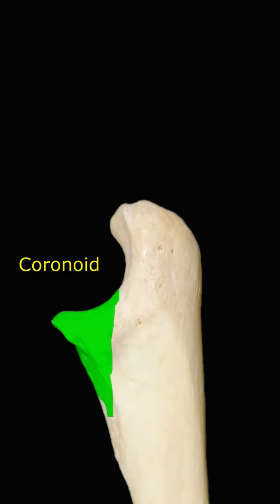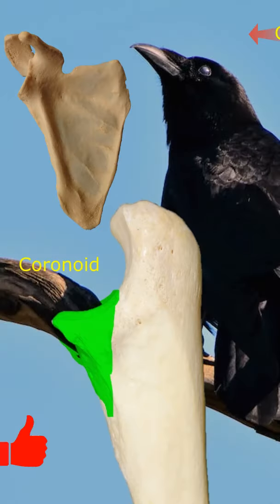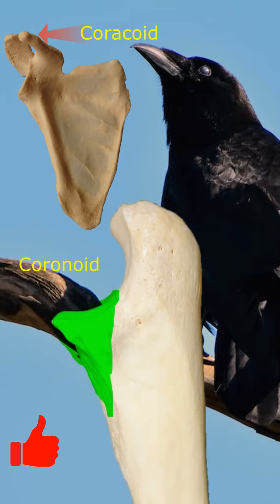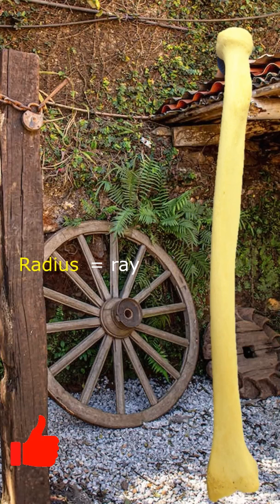The coronoid process means shaped like a beak, similar to the coracoid process of the scapula, but they cannot replace each other. The radius means ray, since it looks like the spokes of a wheel radiating from the center.